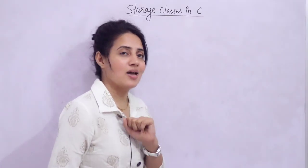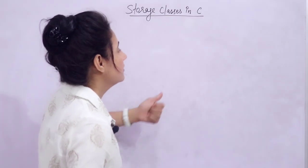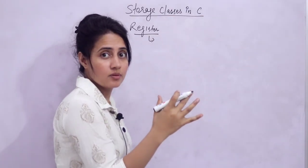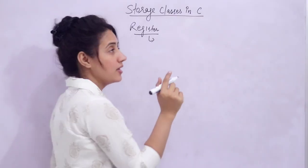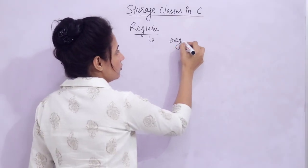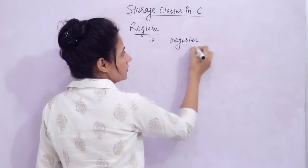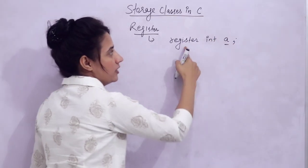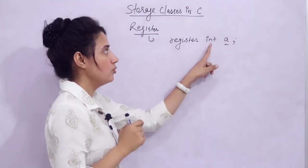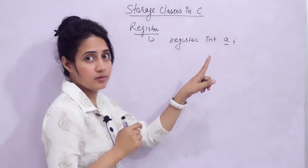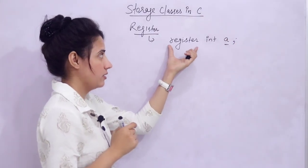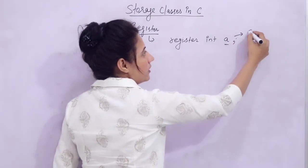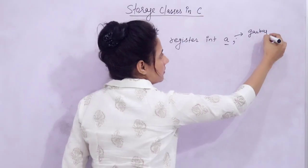Now let's see what is register storage class. First, it is the same as auto storage class except for two differences. You use the keyword 'register' followed by the data type and variable name, instead of 'auto'. The default value is garbage value, same as auto.